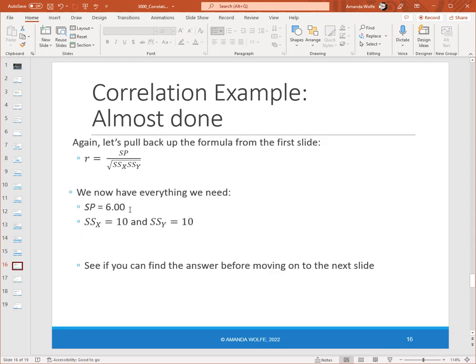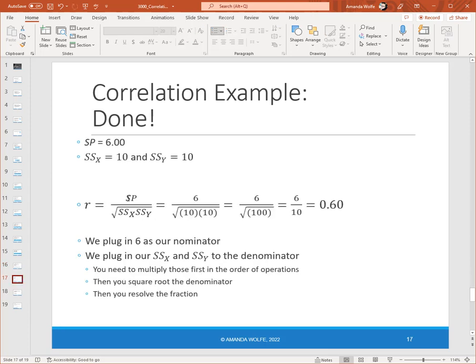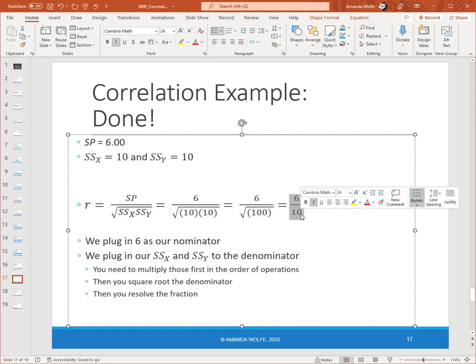So if that's our formula and we have our sum of products is six, our sum of squares X is ten, and our sum of squares Y is ten, you can plug everything in and come up with the answer. So pause the video. So our sum of products is six, our sum of squares X is ten, our sum of squares Y is ten. So on the denominator, we need to multiply these two things together, which would be a hundred, and then we take the square root, which would be ten.